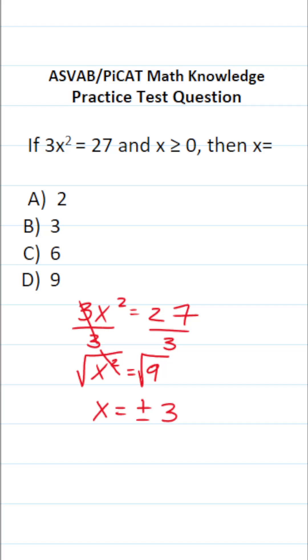Now in this case, the question specified that x is greater than or equal to zero. So the answer to this one is x is positive 3. So this one is B, of course.